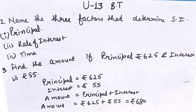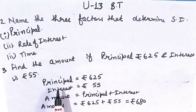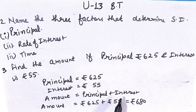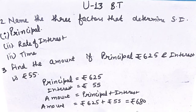Let's recap: to find amount, principal and interest are given. Formula of amount is principal plus interest. 625 plus 55 equals 680. So amount will be Rs.680.